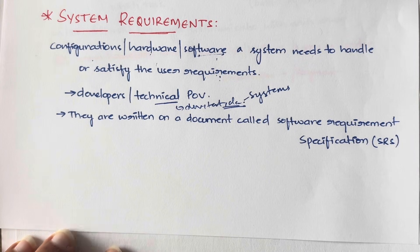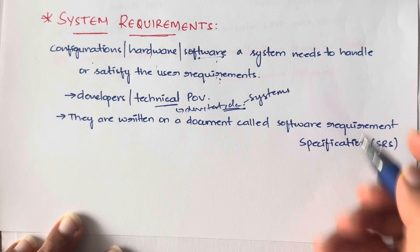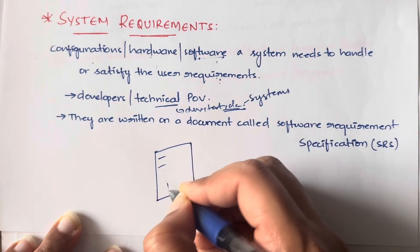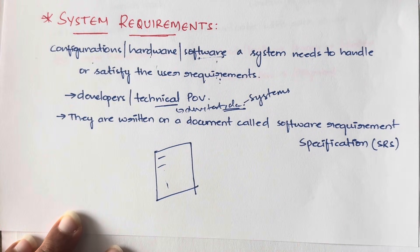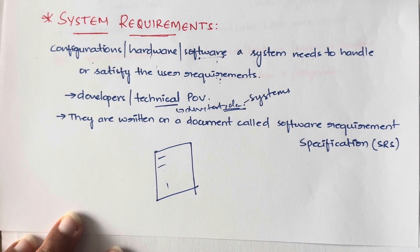Usually these things are written in a document called the Software Requirement Specification, which is the SRS. The format of the SRS document — like what is written first and so on — I'll explain in a separate video, because that's a separate standalone topic, making it easier to refer to.